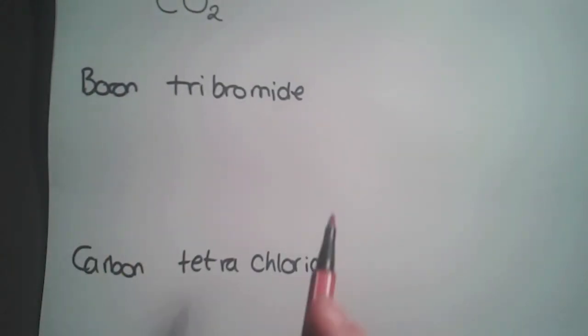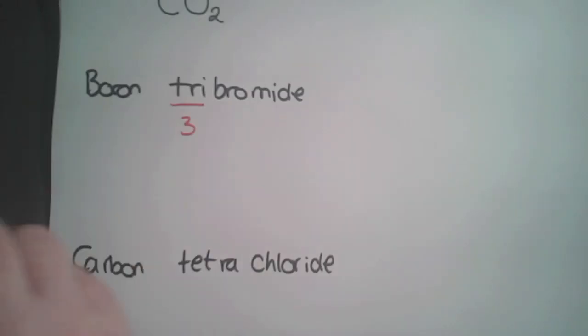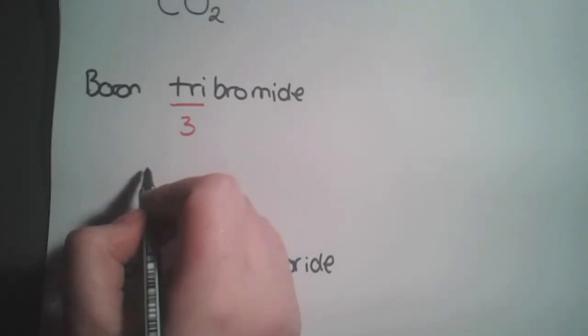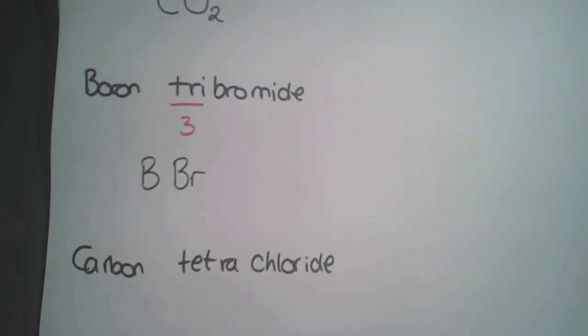In our next example, working up through the prefixes, we have boron tribromide. Tri is for three. Boron is B and bromide is represented by Br, and this time it's a subscript 3 to show that you have three bromides.